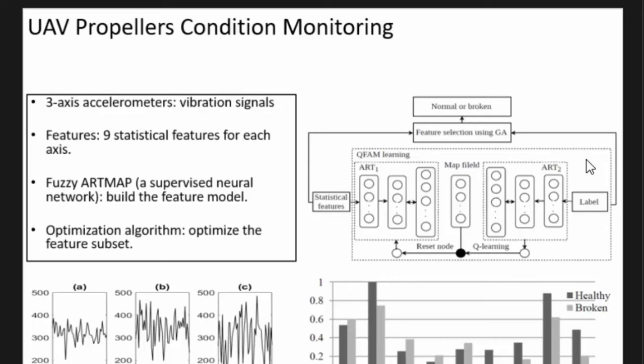But the challenge is how can we choose proper features when there are so many statistics? At first stage, for each axis we use nine statistical features, so total is 27. We want to reduce them further to find out which are most relevant.